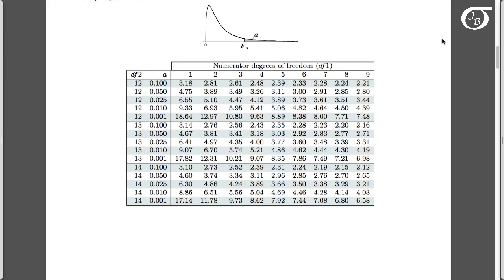Here is my F table. Some F tables are set up a little bit differently than this, but in any event we're going to need to find our appropriate degrees of freedom. The problem had 3 degrees of freedom in the numerator and 14 degrees of freedom in the denominator, so we find numerator degrees of freedom of 3 and denominator degrees of freedom of 14. Our world now revolves around these values.